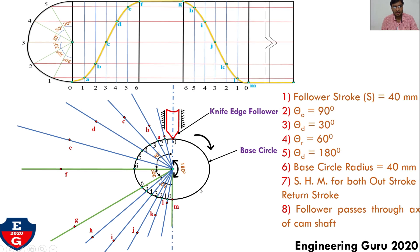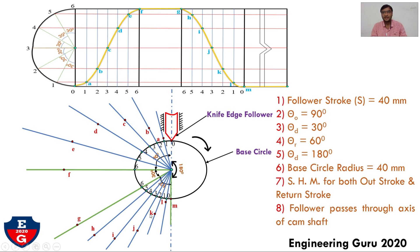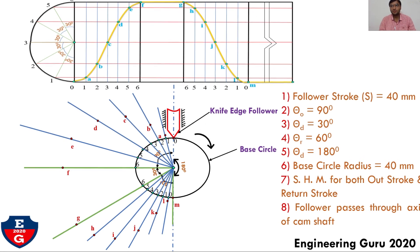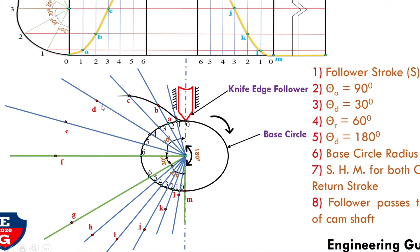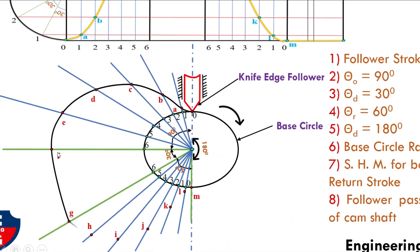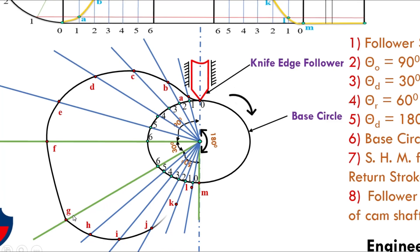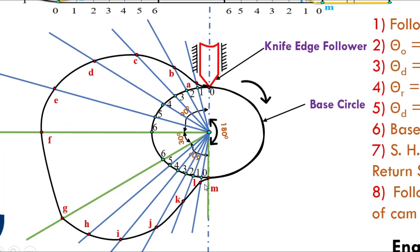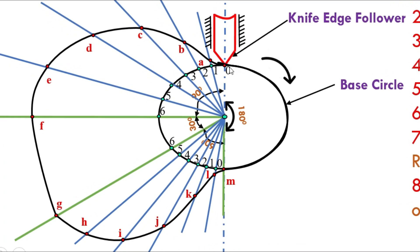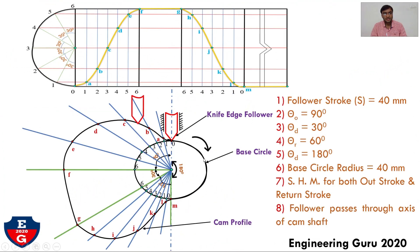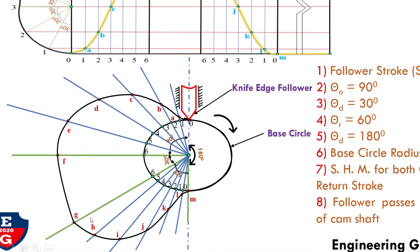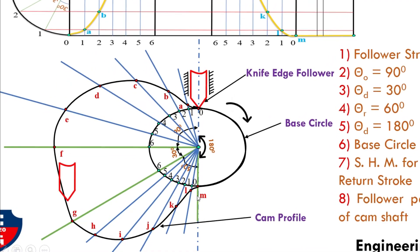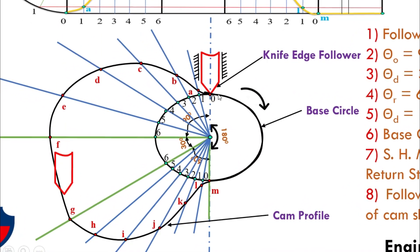Since this is a knife-edge follower, draw a smooth curve passing through points 0, A, B, C, D, E and F for the outstroke. Then dwell from F to G as an arc. Then draw smooth curve through G, H, I, J, K, L, M for the return stroke. Finally, dwell from M back to point 0 for the remaining 180 degrees. This completes the required cam profile, with points 0, A, B, C, D, E, F, G, H, I, J, K, L, M and back to 0.